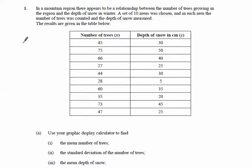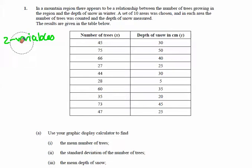We're going to do one exam question on Pearson's and linear regression. What Pearson's and linear regression is all about is looking to see whether there's a link between two different types of data — two variables — and then looking to see if we can make an equation and predict results. That's what we're effectively doing here.